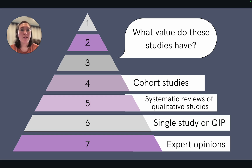Level five evidence is from systematic reviews of qualitative studies, and level four evidence is from cohort studies.